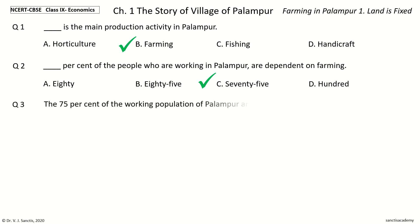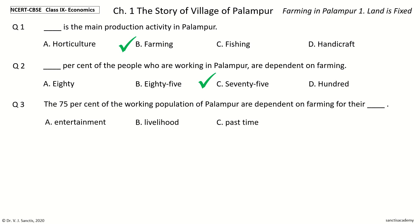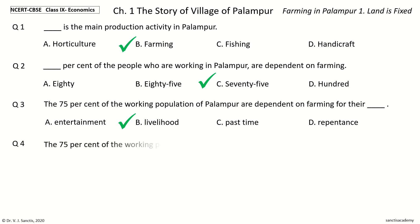Question 3: The 75 percent of the working population of Palampur are dependent on farming for their Dash. The options are Entertainment, Livelihood, Pastime, Repentance. Your time to choose. And the answer is Livelihood. So, 75 percent of the working population of Palampur are dependent on farming for their livelihood.